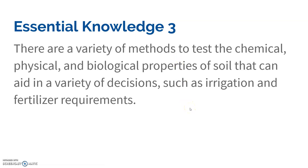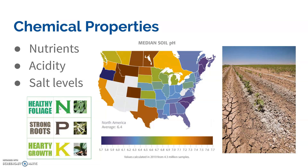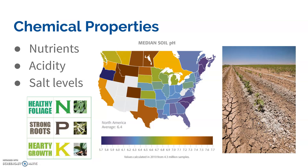The different properties of soil are important to know, especially if you're a farmer or gardener, because they affect decisions about watering and providing nutrients. Chemical properties include nutrients, acidity, and salt levels. The main nutrients are nitrogen, which affects foliage; phosphorus, which affects roots; and potassium, which affects growth — you want a good balance of these. pH matters because certain plants won't grow at certain pH levels, so you need to test and modify your soil. Salt can also damage plant roots.